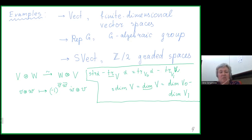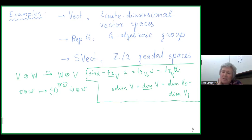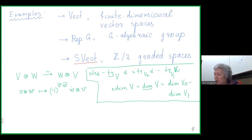In positive characteristic, the usual dimension and the categorical dimension can differ — for example, the categorical dimension becomes zero when the usual dimension is divisible by p, since p equals zero in the field. The example I'm most interested in is the category of vector superspaces, denoted SVect, which are Z₂-graded vector spaces with a grading V = V₀ ⊕ V₁.